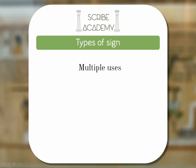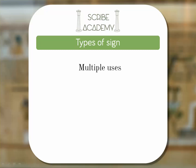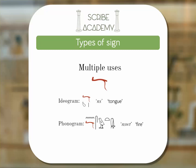Many hieroglyphs could be more than one type of sign. For example, the mouth hieroglyph represents the word 'er' meaning mouth, but because of its R sound it's also used as the letter R. In some instances a hieroglyph could be all three: the tongue hieroglyph could be an ideogram for the word 'tongue,' a phonogram 'nez' as in the word 'nezut' meaning fire, or a determinative for words relating to the tongue, such as taste.